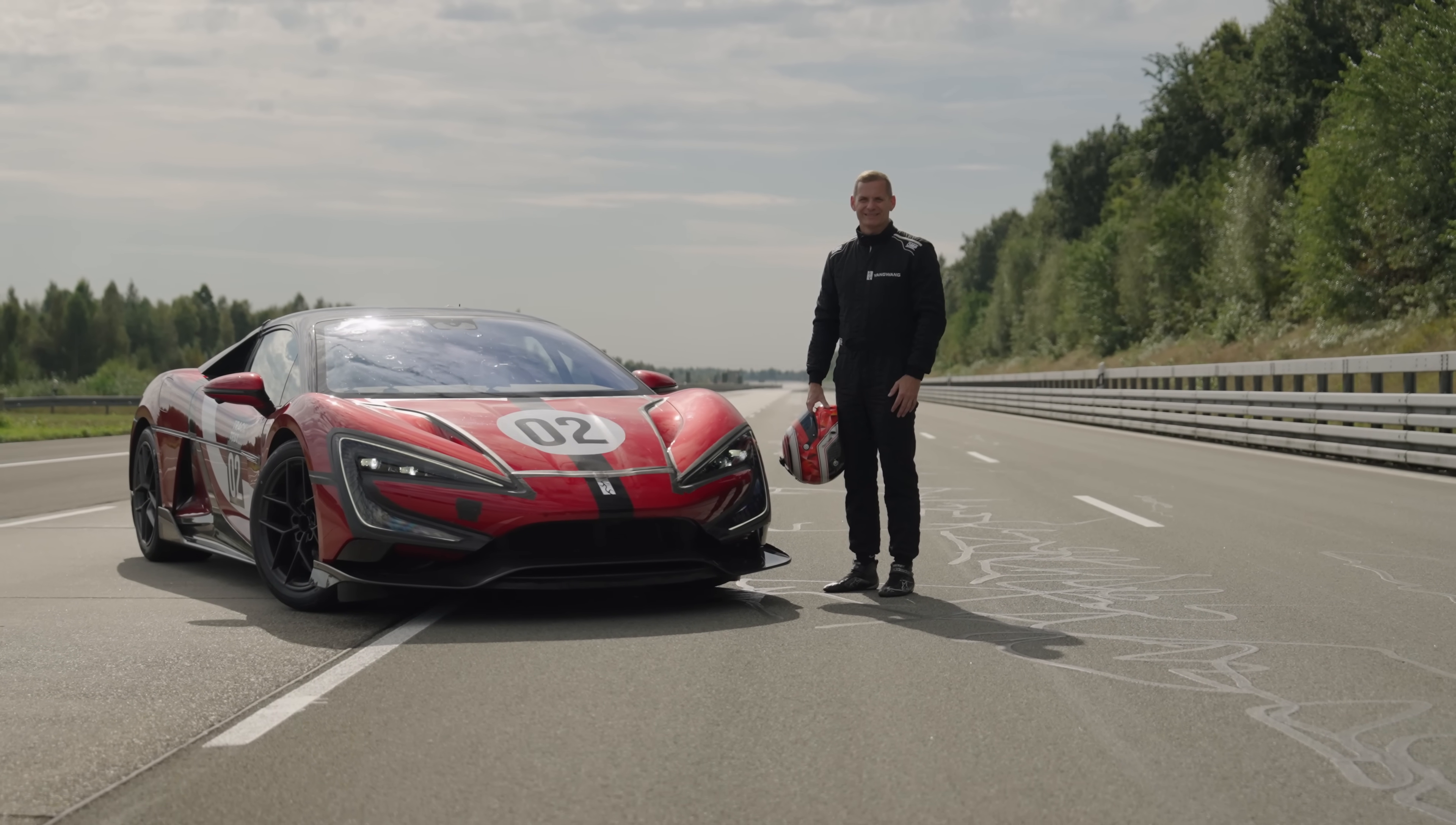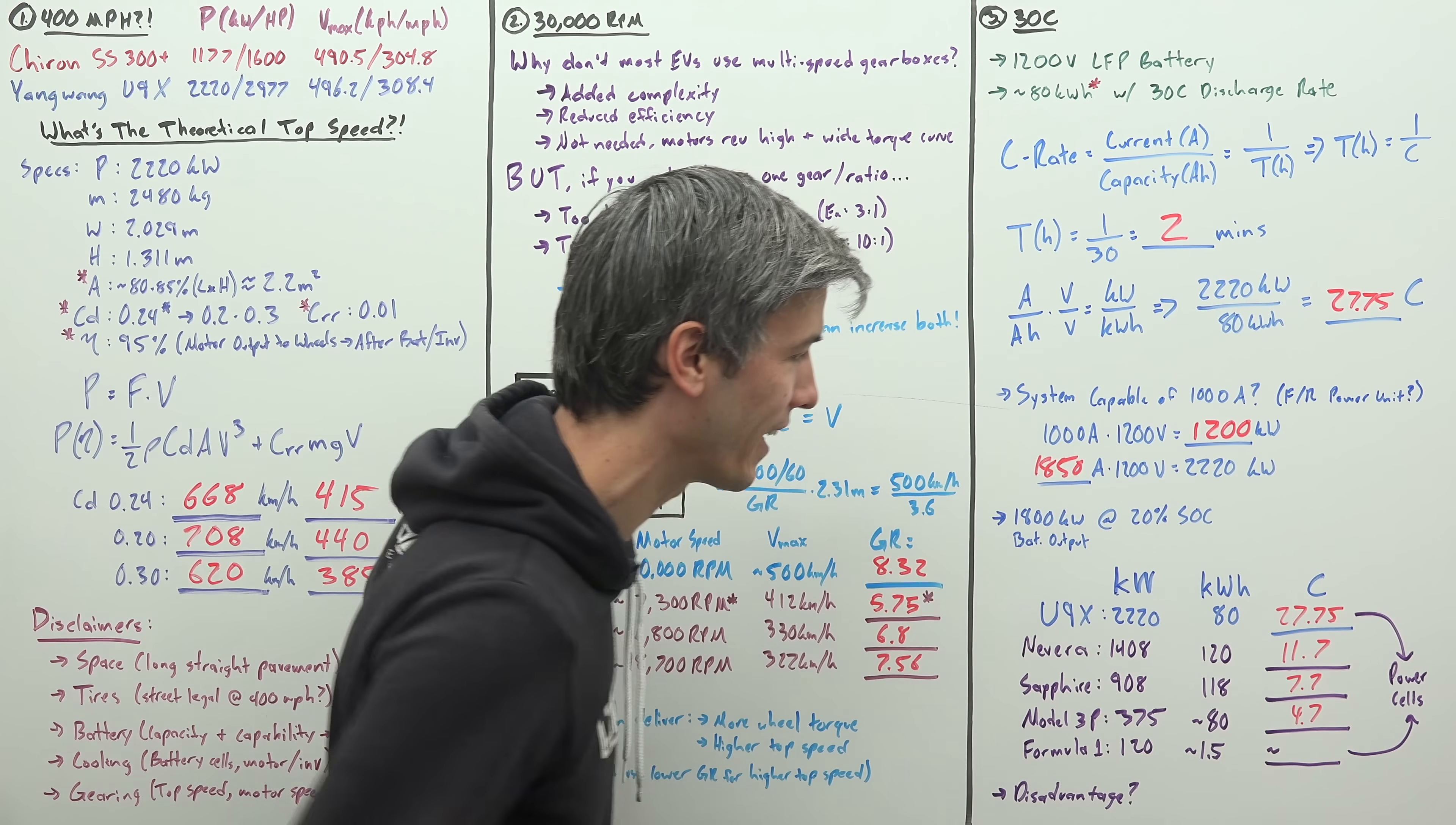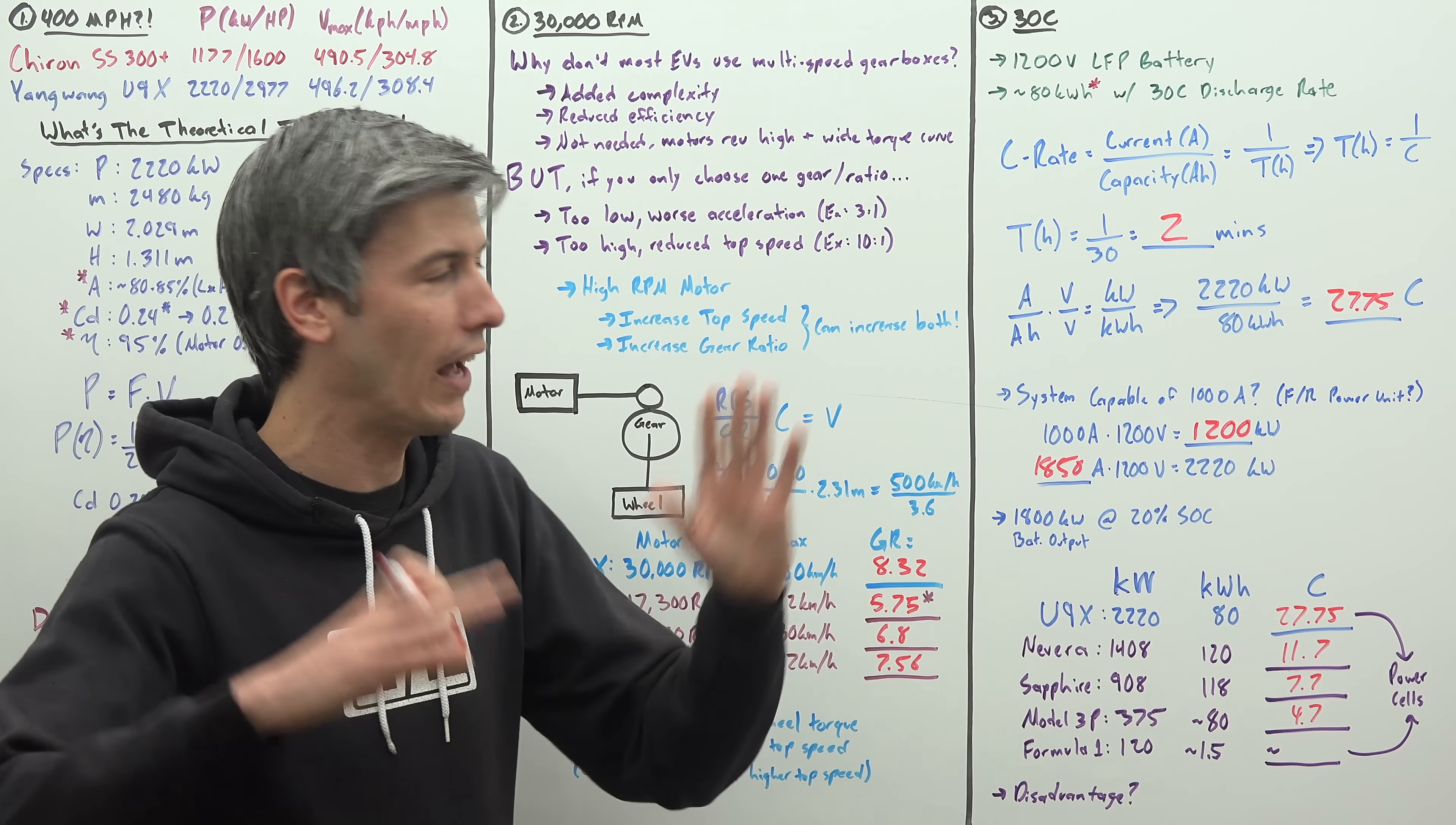But going back to this 30 C discharge rate, how does this compare to other electric supercars? So if you compare the motor output to the battery capacity, of course, you get that 27.75 number we calculated earlier. Comparing that to the competition, Rimac Navarra, a very fast electric car, it's less than half of that as far as the C rate for the Lucid Sapphire. Less than a third at 7.7. Something more normal, a Tesla Model 3 Performance, 4.7 versus 27.75. Now, so all of this is saying for a production car, this is an absolutely absurd number. It's not unheard of out in the rest of the world.